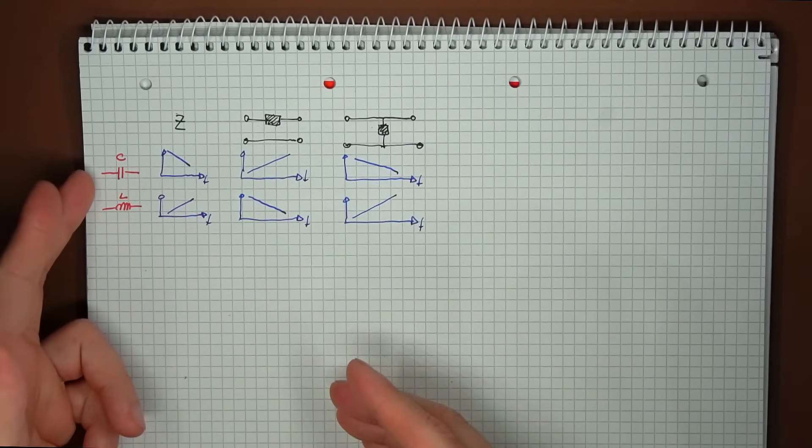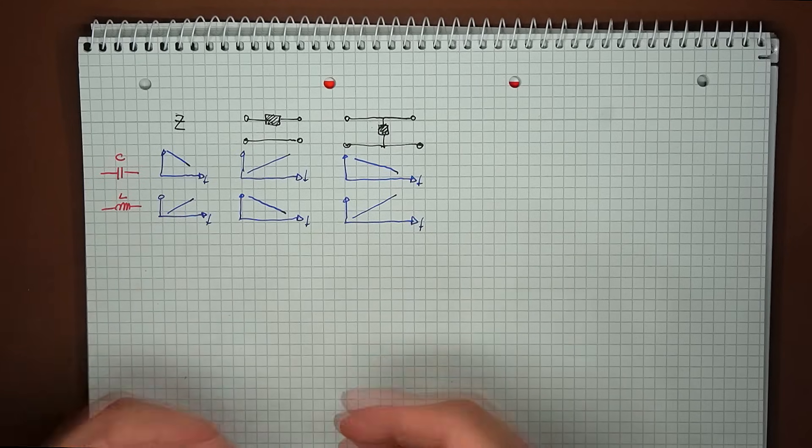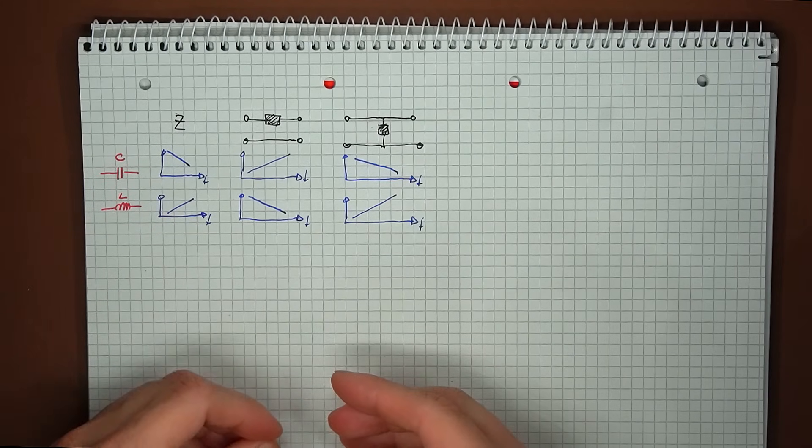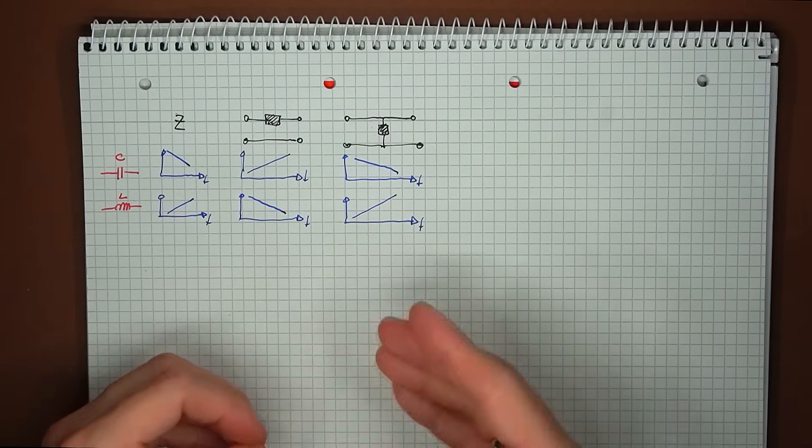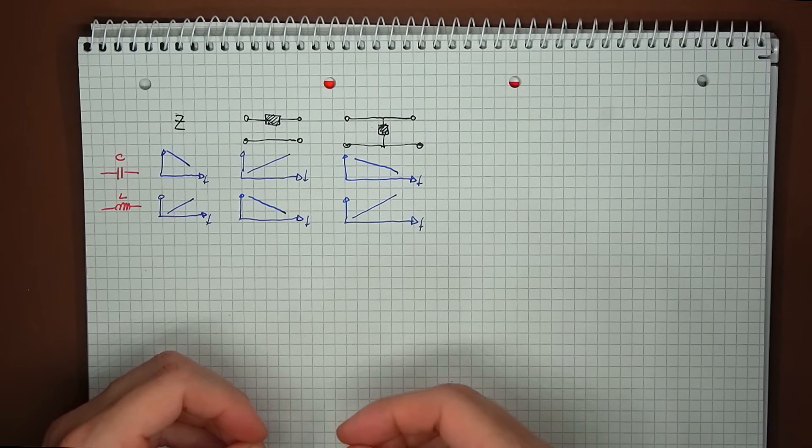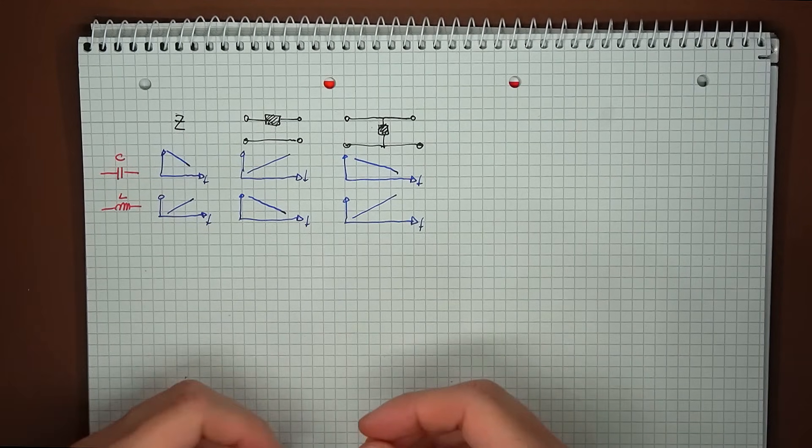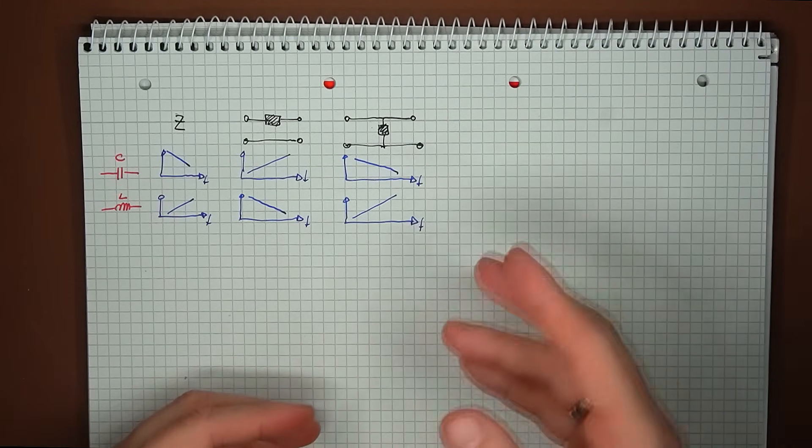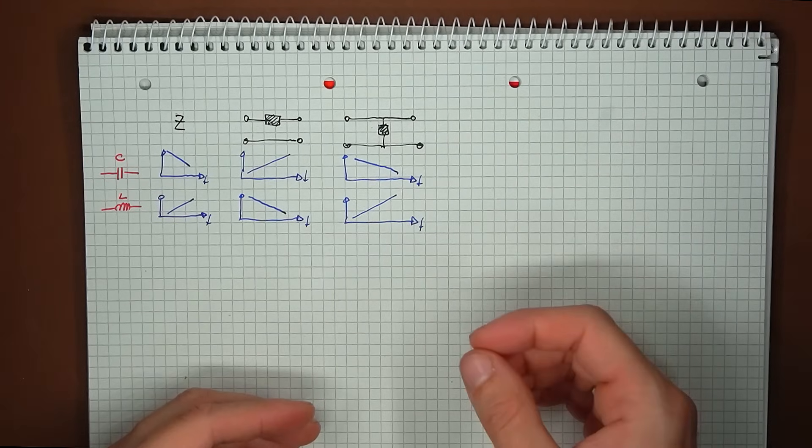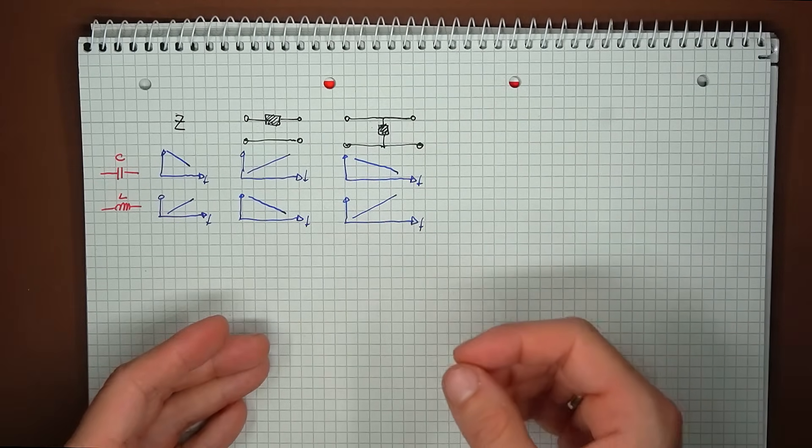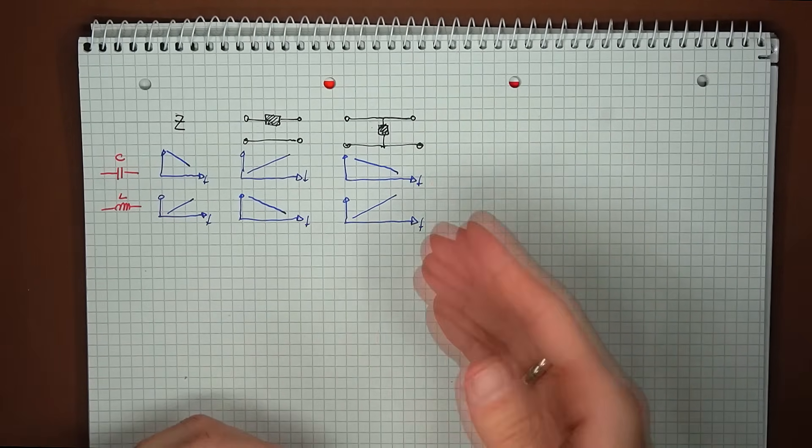For the standalone capacitor, impedance drops as frequency increases, and when the capacitor is placed in series, it presents a high attenuation at low frequency, and this decreases as frequency increases. And when it's placed in parallel, we see the opposing effect. Small attenuation at low frequency, and high attenuation at high frequency.